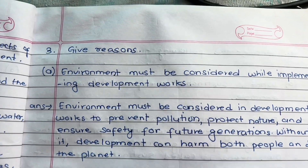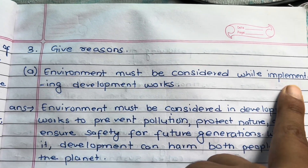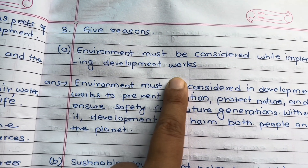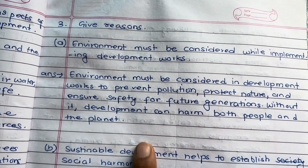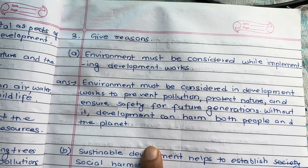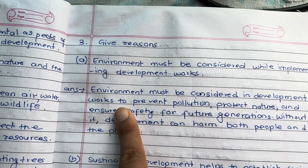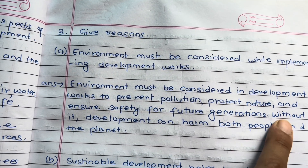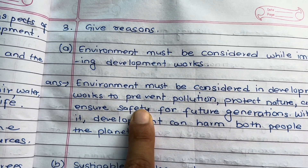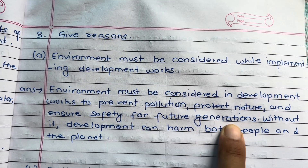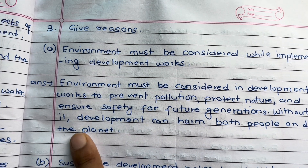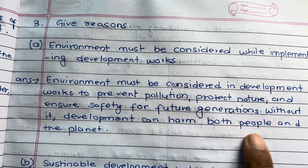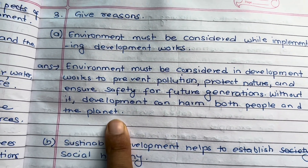Give reason: Environment must be considered while implementing development works. To prevent pollution, protect nature and ensure safety for future generations. Without it, development can harm both people and the planet.